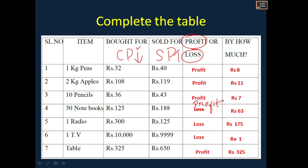Then check by how much profit or loss: subtract the two values. 40 minus 32 = rupees 8. Then rupees 11, rupees 7, rupees 63, rupees 175, then rupees 1, then rupees 325. In each case you must mention rupees. This one is profit because the selling price is more.